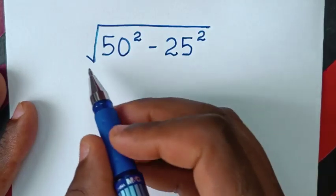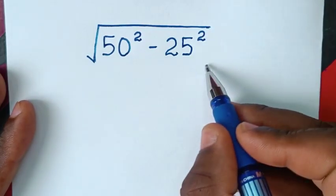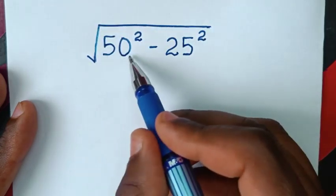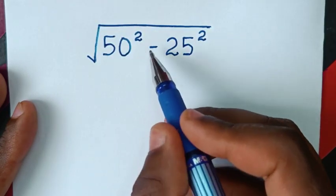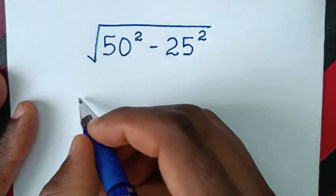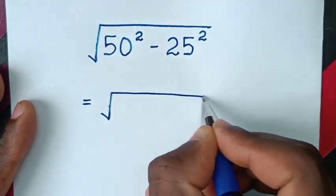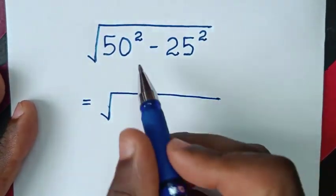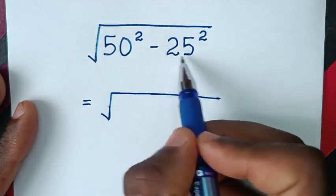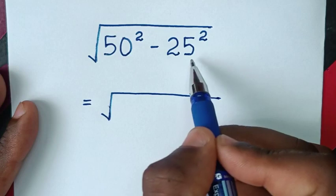Hello, you are welcome to solve this math problem, which is the square root of 50 squared minus 25 squared. It will be equal to the square root of 50 squared minus 25 squared. This is in the form of a perfect square.